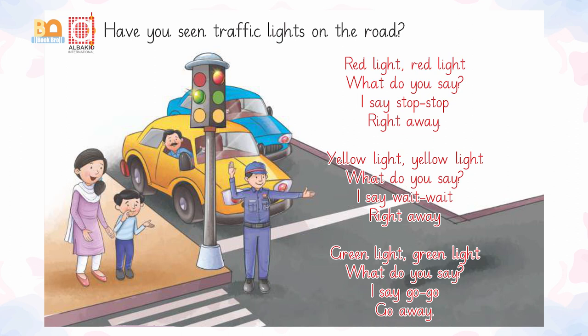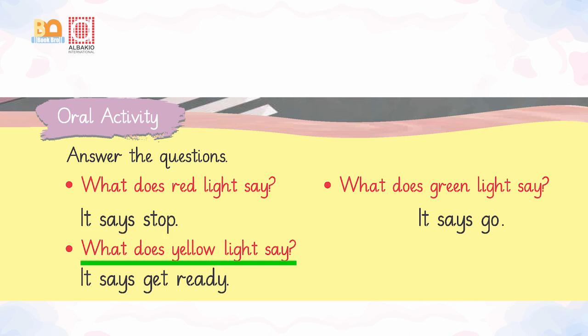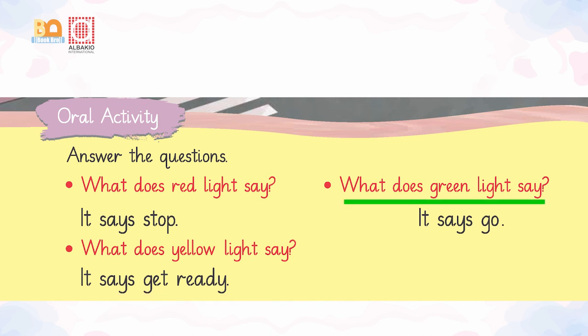How do these traffic lights help us? These traffic lights help us to control the flow of traffic on the roads. What does red light say? It says stop. What does yellow light say? It says get ready. And what does green light say? It says go.